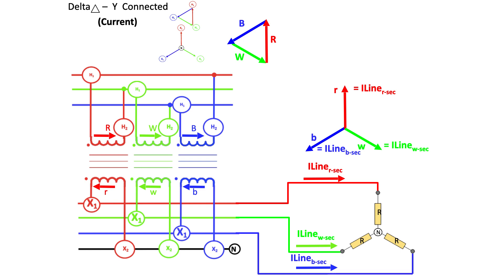So the currents flowing in the transformer windings, as you see there, are going to be 120 degrees apart. Which means the currents flowing in the windings of the primary are also going to be 120 degrees apart.